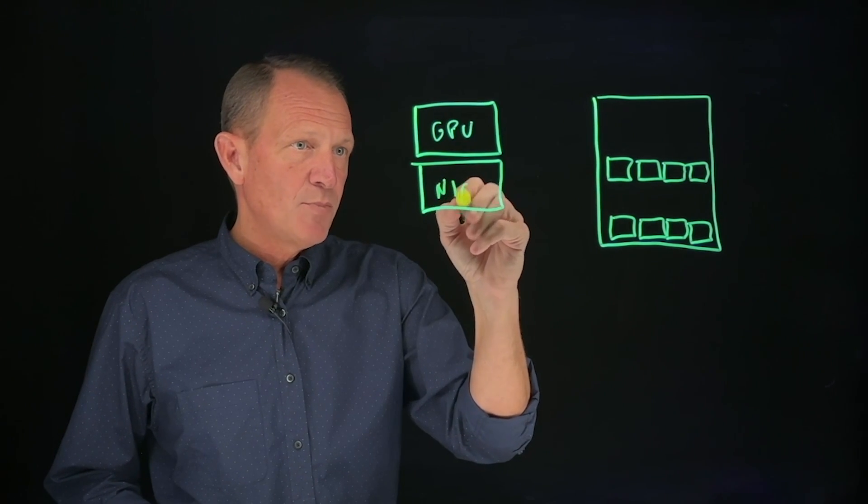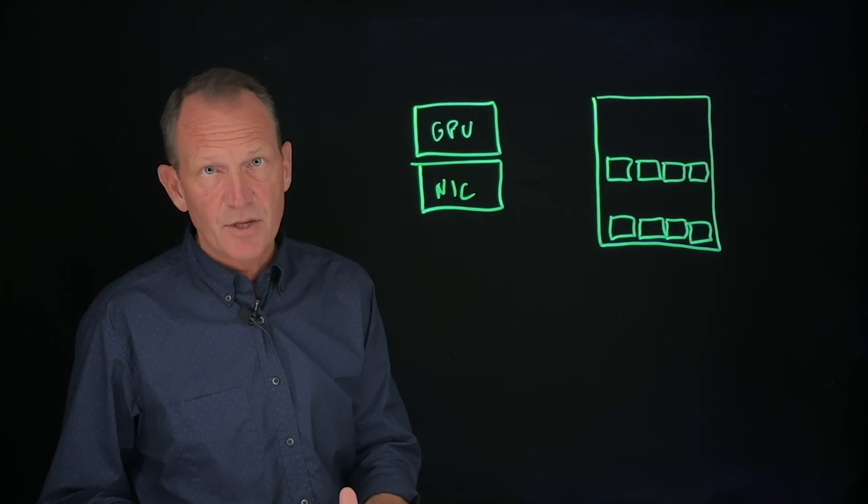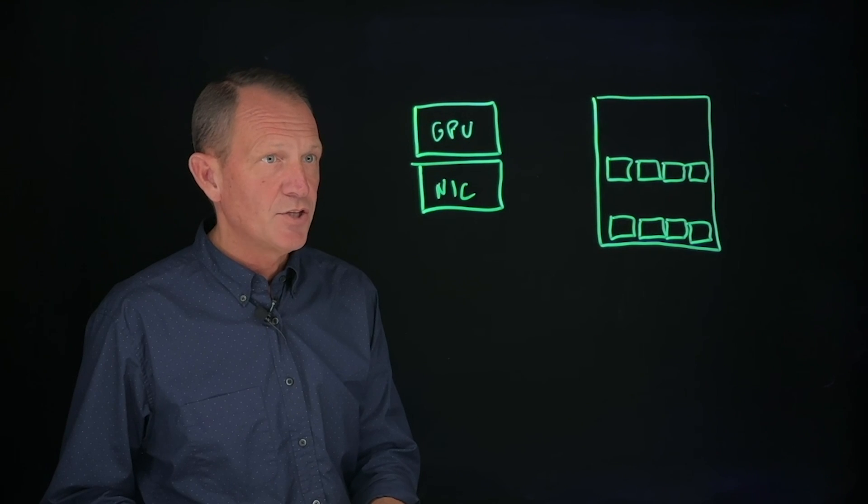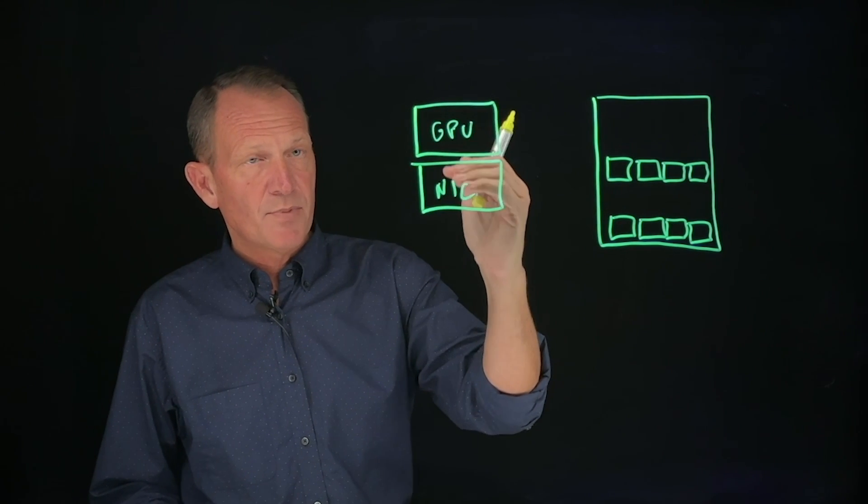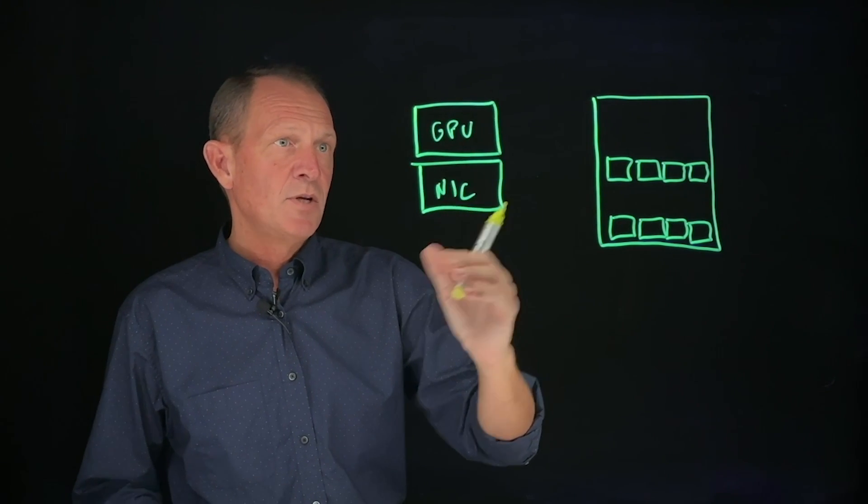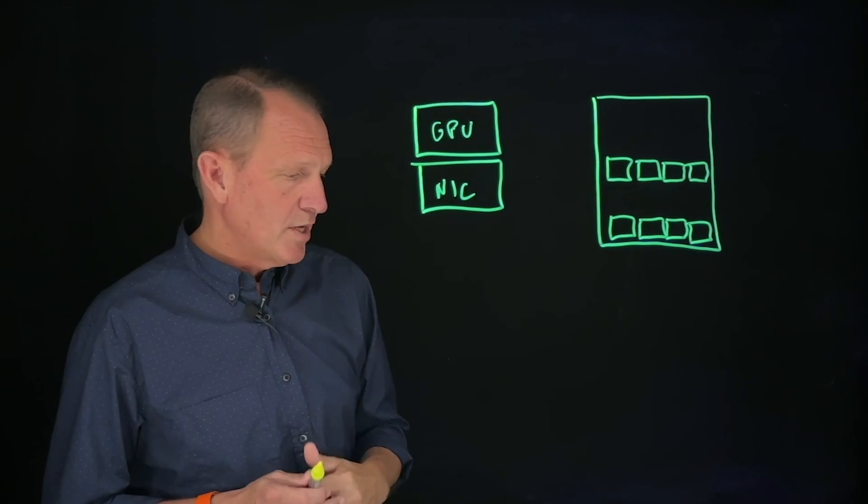We match up every GPU with its own NIC card, very typical in larger AI installations. Between the combination of the GPU that does something and the NIC card which can communicate for us, we now have our base unit of capacity.